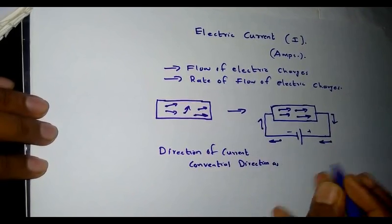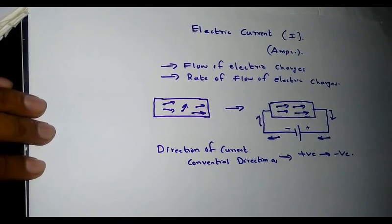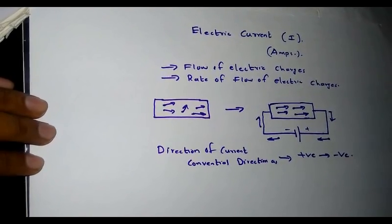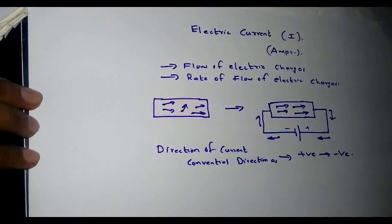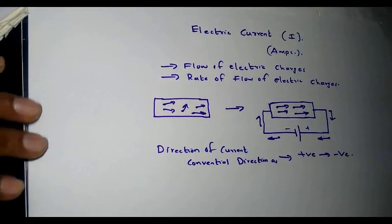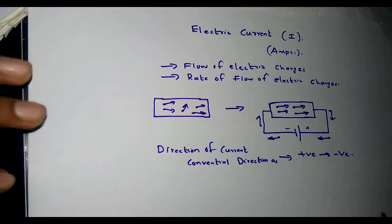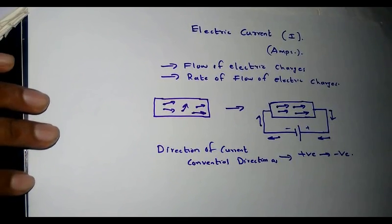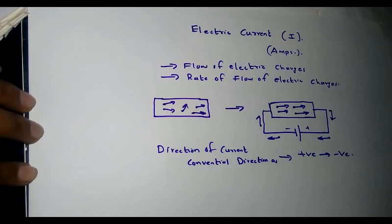The conventional direction of current is from positive to negative — that is, from a higher potential point to a lower potential point. This is because, prior to electron theory, it was assumed that current flows from the positive terminal towards the negative terminal of the cell. After the discovery of electron theory, it was established that electrons actually move from the negative terminal towards the positive terminal, but for calculations and explanations, we consider the direction of electric current as from positive to negative terminal.